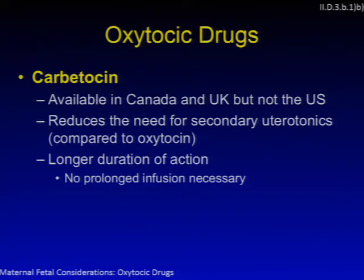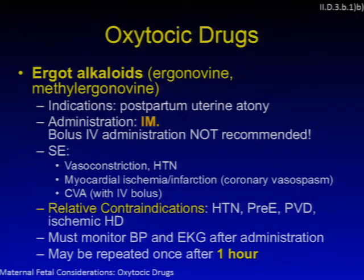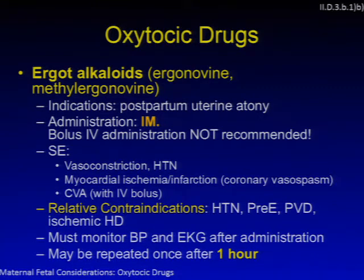Carbetocin — not available in the U.S. but available in Canada and the U.K. — reduces the need for secondary uterotonics compared to oxytocin and has a longer duration of action without needing continuous infusion. Ergot alkaloids — ergonovine and methylergonovine — are indicated for postpartum uterine atony and given intramuscularly. IV administration is not recommended due to serious side effects including vasoconstriction, hypertension, myocardial ischemia or infarction by coronary vasospasm, and stroke. They are relatively contraindicated in patients with hypertension, preeclampsia, peripheral vascular disease, or ischemic heart disease. Blood pressure and EKG should be monitored, and the dose can only be repeated after one hour.